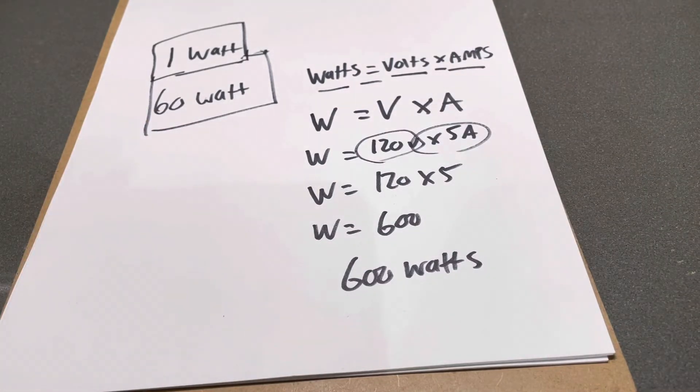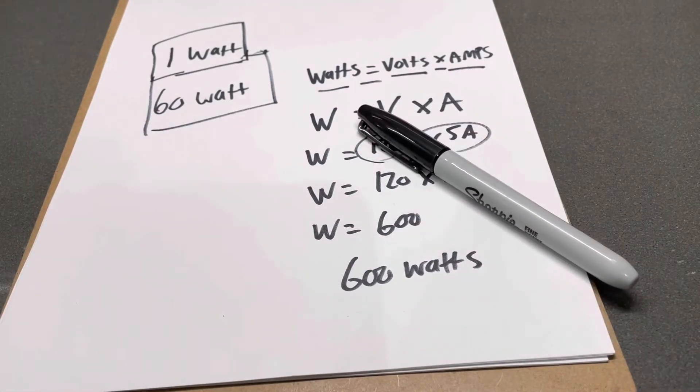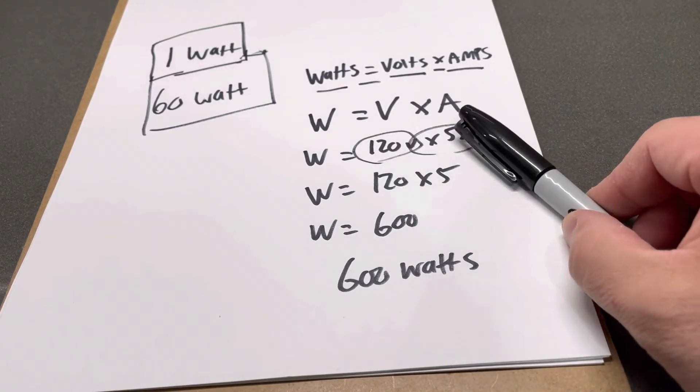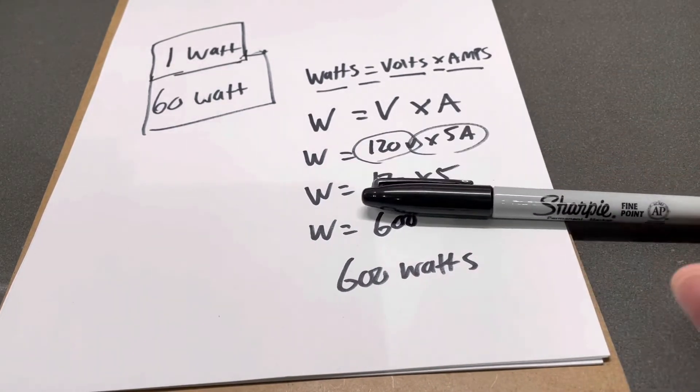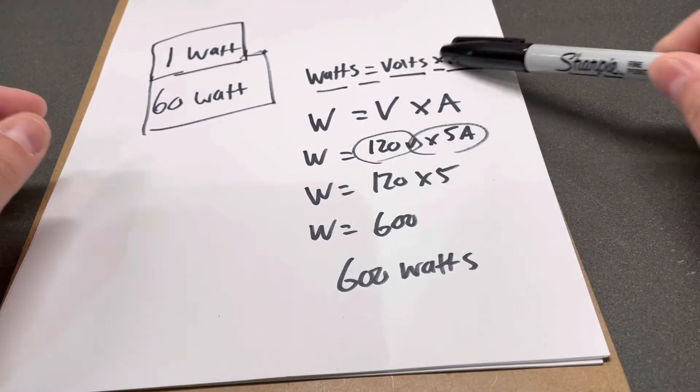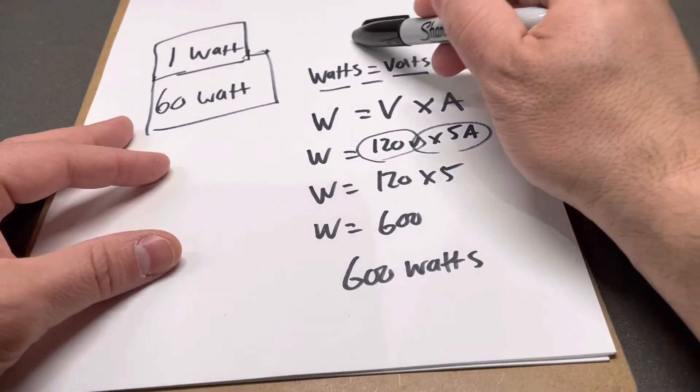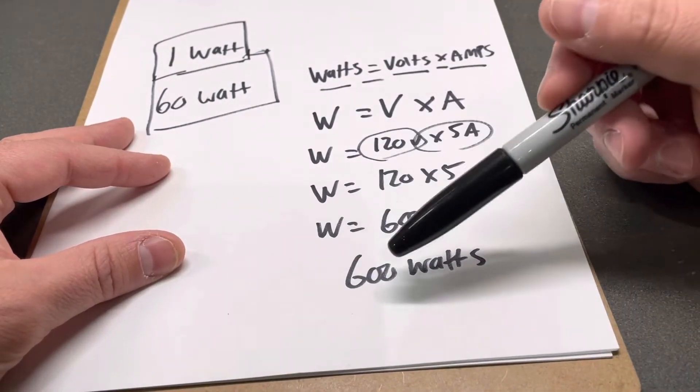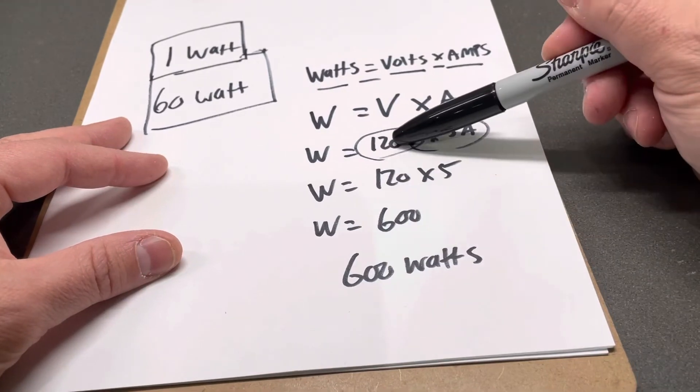And that is essentially it. Now voltage and amperage are two completely separate things in terms of how to calculate them, but they're easy to do because you can reverse engineer this formula. If you know the watts that something has and you know the volts, you can then reverse engineer to find the amps. And separately, if you know the amps and you know the watts, you can reverse engineer to find the volts.